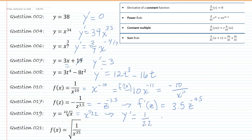1 over 22 out front, x to the 1 over 22 minus 1, which would be 1 over 22 minus 22 over 22.